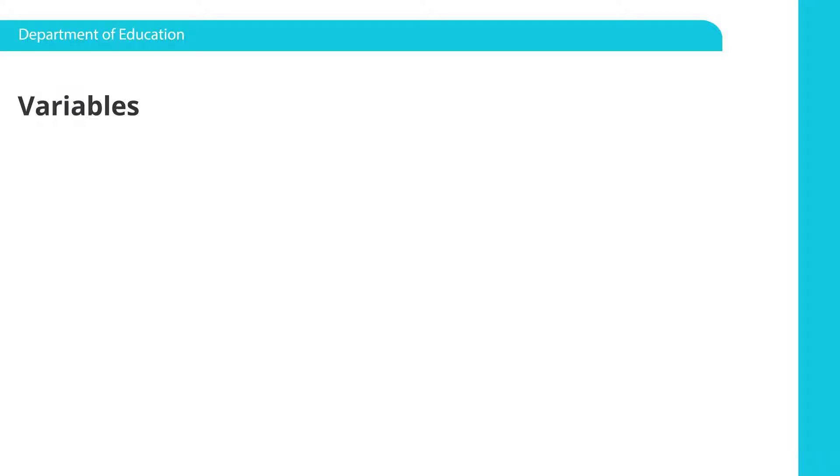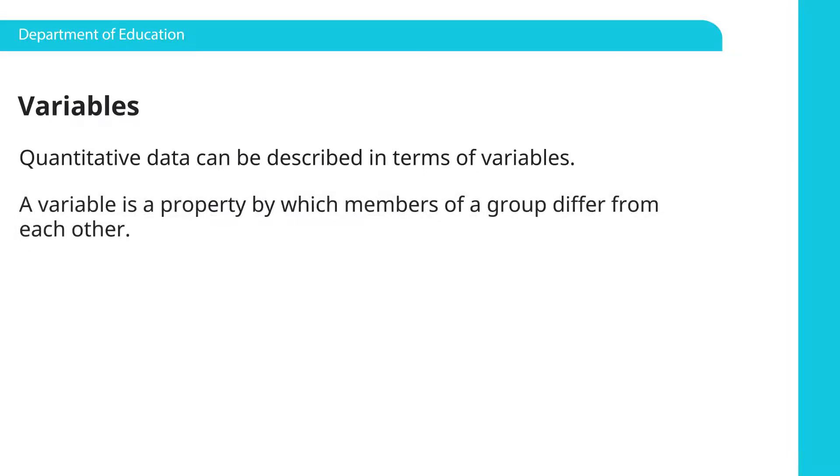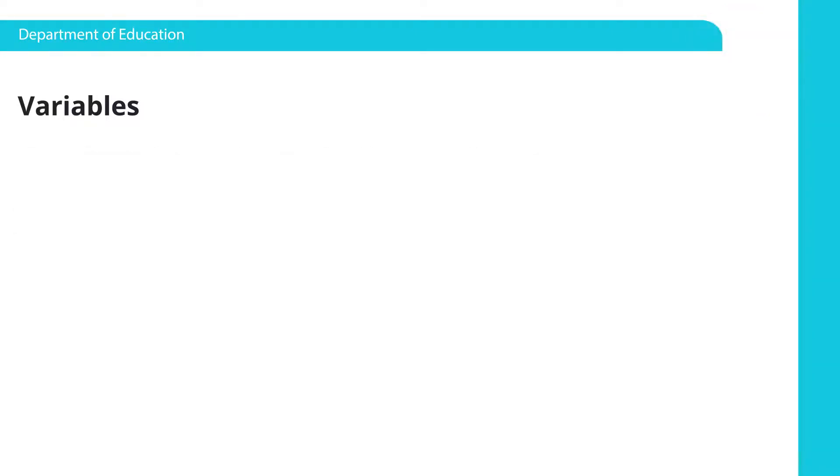Variables. So we're just introducing some new words today. Quantitative data can be described in terms of variables. A variable is a property by which members of a group differ from each other. When we looked at the science classroom as a whole, when we look at the members in that classroom, we're looking at the different genders. So that would be a variable. The variable would be gender, because according to a person's gender, that makes them different from other members in that classroom.